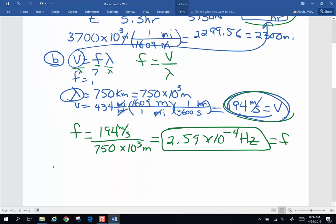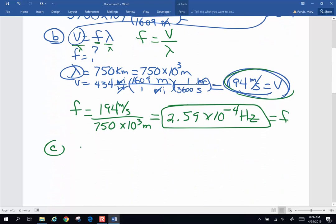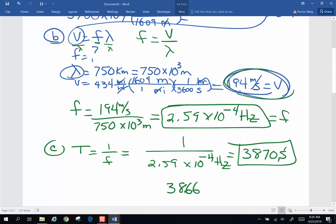And then part C. What's the period of the wave? How long between wave crests? Period, as you know, is 1 divided by frequency. So if I take 1 over 2.59 times 10 to the negative fourth hertz, what am I going to get for period? So I'm going to take 1 divided by that, and I got 308.66 on my calculator. Keep that in three sig figs. I'm going to get 308.7 seconds between wave crests. That's going to be a long time. So that is my period.